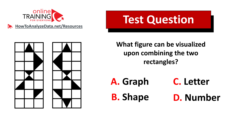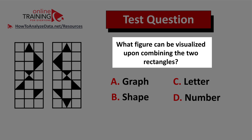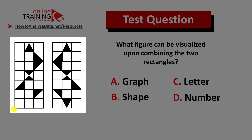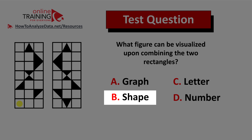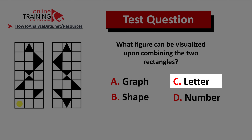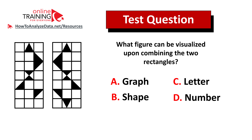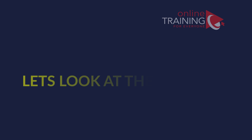Here's the next tricky question: what figure can be visualized upon combining the two rectangles? You have two seven-by-three rectangles on the left and four choices: choice A graph, choice B shape, choice C letter, and choice D number. Upon merging the two rectangles, the number eight can be visualized, and eight is a number, so the correct answer is choice D number.